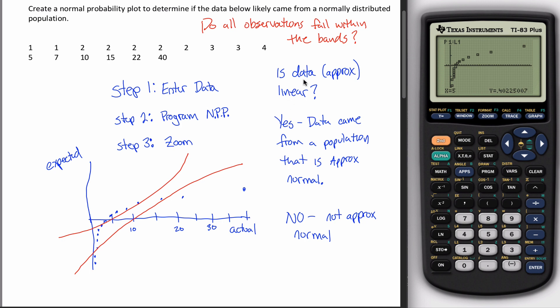If the answer is yes, then your data is approximately linear, so the data came from a population that's approximately normal. If the answer is no like it is here, here's an observation that's not in between the bands. There's a bunch that aren't between the bands.